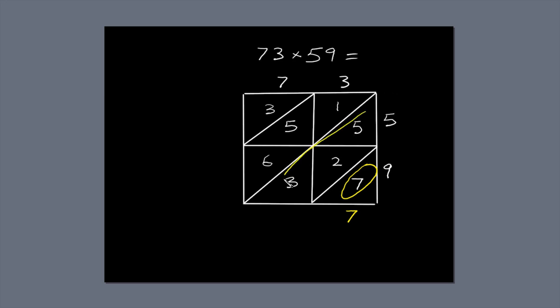The next diagonal has three numbers: 5, 2, and 3. 5 plus 2 is 7, plus 3 is 10.